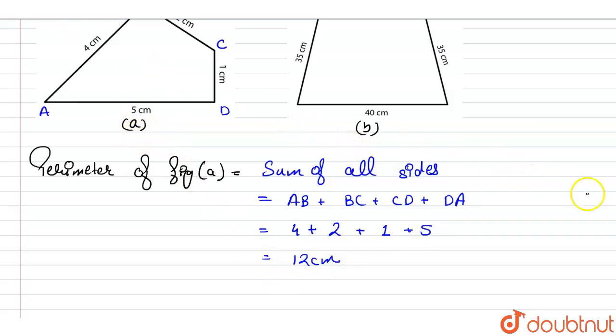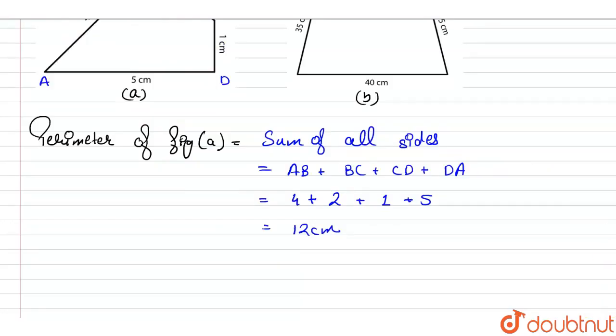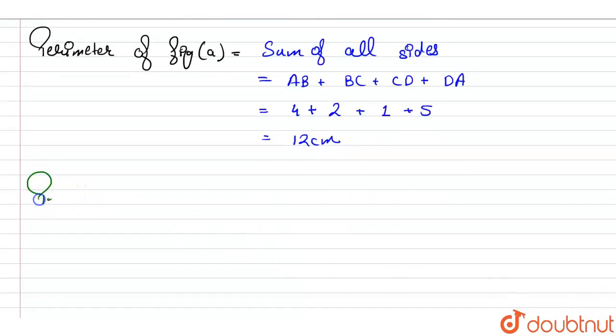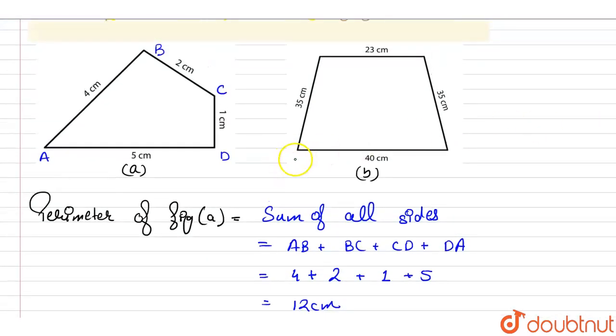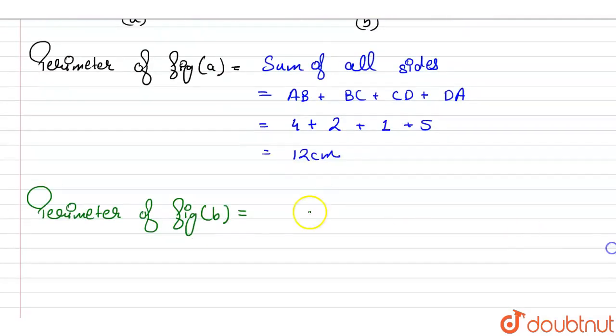Similarly, we will be finding out the perimeter of figure number B. So perimeter of figure B will be equal to, now the perimeter of figure B will also be equal to sum of all sides. So let this point be equals to A, this B, C, and D. So perimeter will be equal to AB plus BC plus CD plus DA, that is sum of all sides.